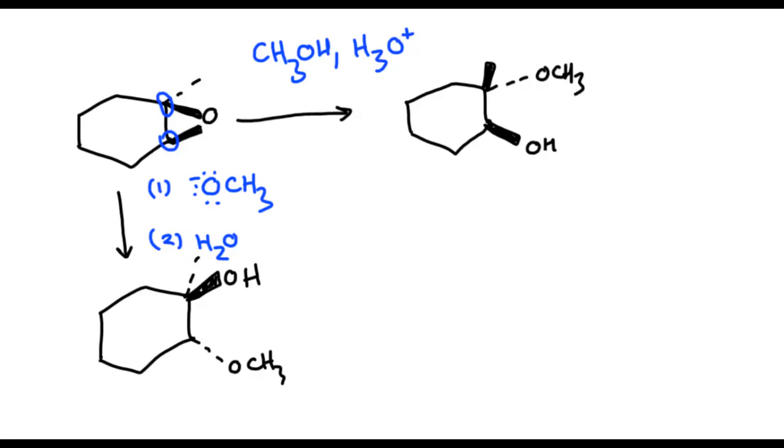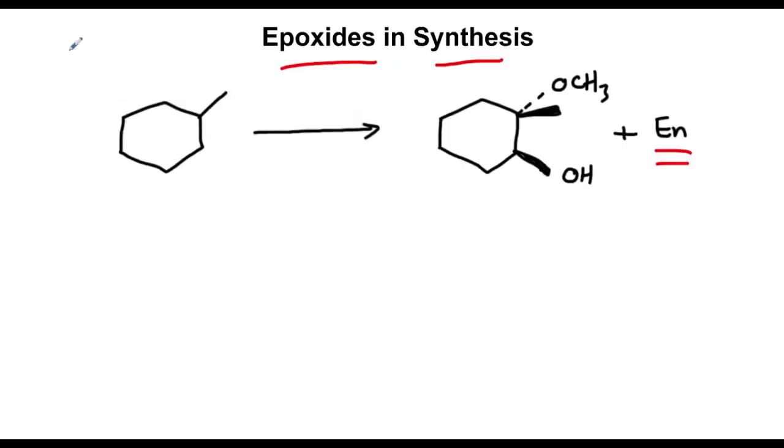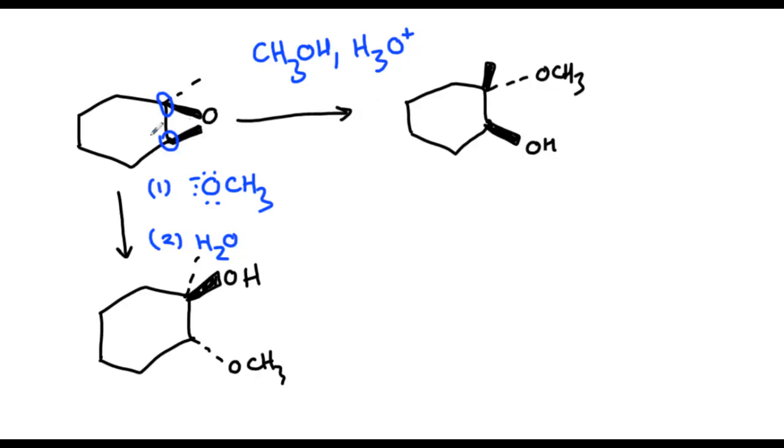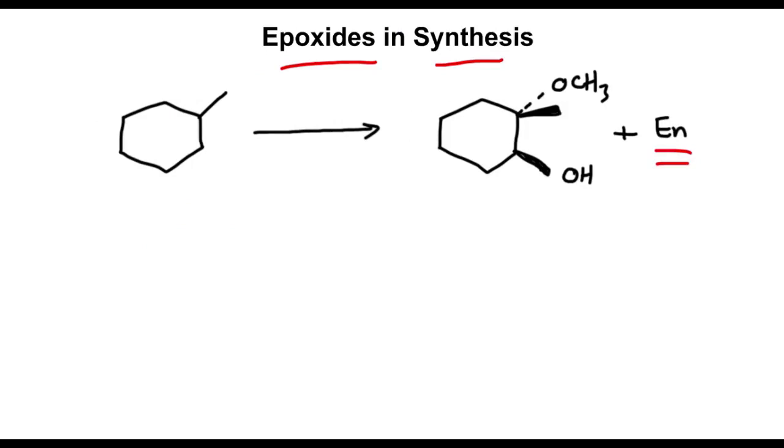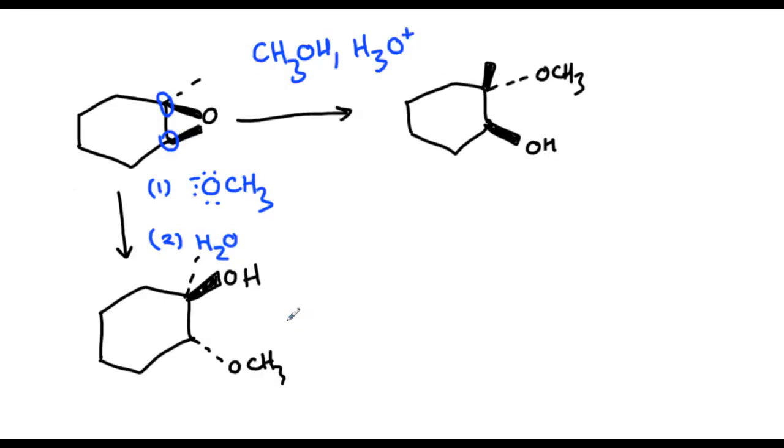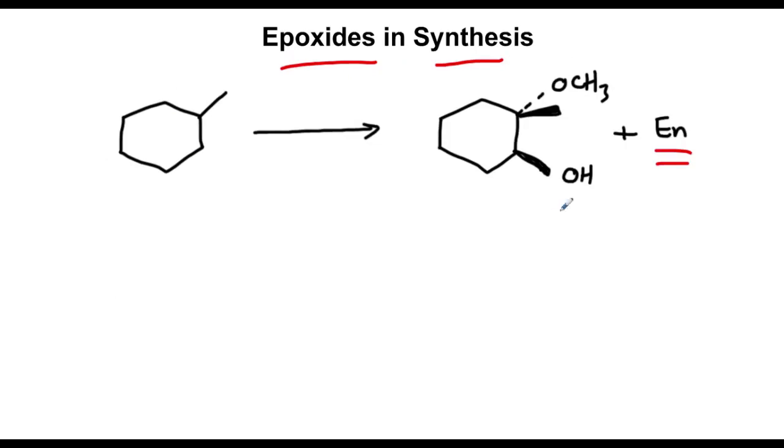So this is how we get two different products depending on what it is you want to do. It's anti-addition in both cases, as you can see, the OCH3 and the OH point opposite to each other. But hopefully you guys can see that these two products are not exactly the same as each other. Now that's going to take us back to where we were here.